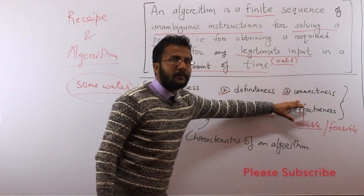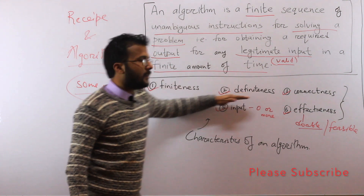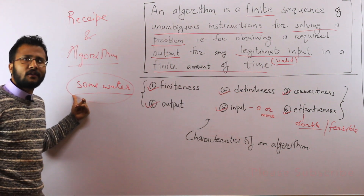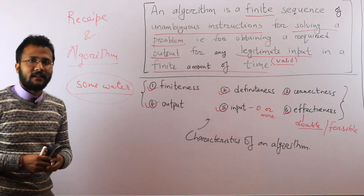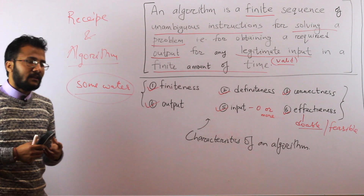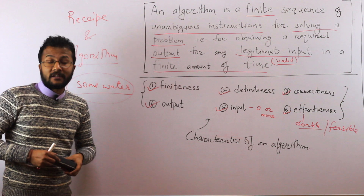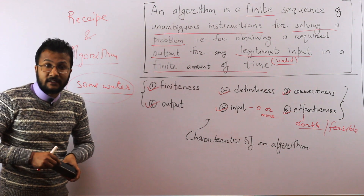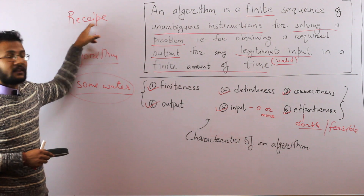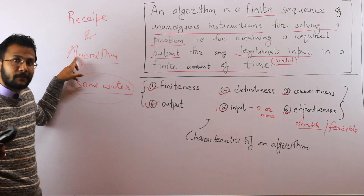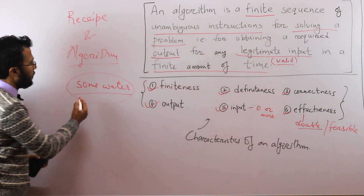Because a recipe doesn't satisfy definiteness, we can't call it an algorithm. Maybe it's correct — you'll get tea in the end — but the instructions are not clear enough. Consider building a tea vending machine like Nescafé's. You can't give a recipe to a machine; you have to give an algorithm, because the machine needs precise instructions.